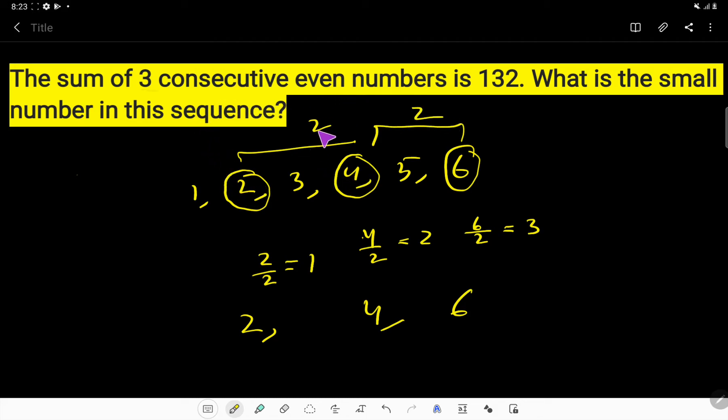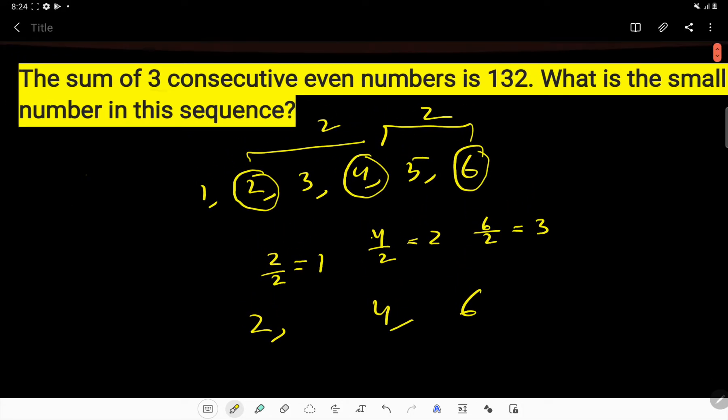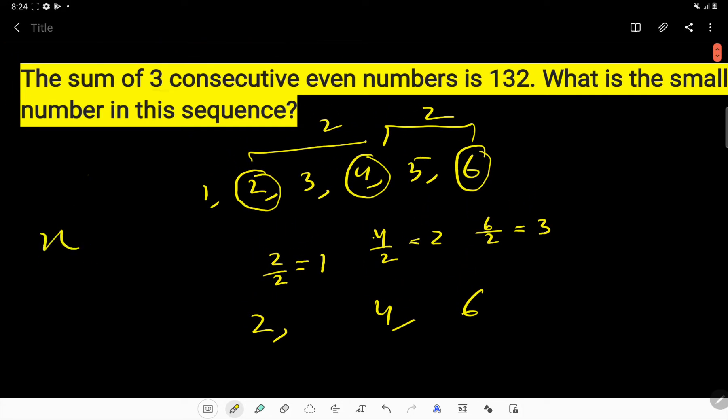So here we have three consecutive even numbers. Let us consider the first number is x. The second number will be x plus 2, as the difference between two numbers is two.